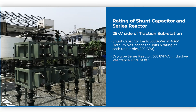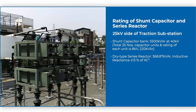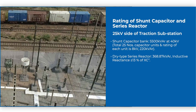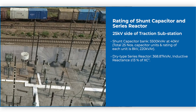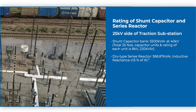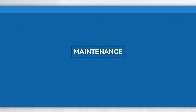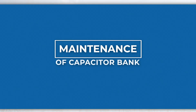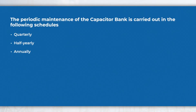The rating of shunt capacitor and series reactor used in a conventional traction substation (TSS) are as listed. The periodic maintenance of the capacitor bank is carried out in the following schedules: quarterly, half-yearly, and annually.